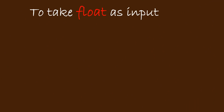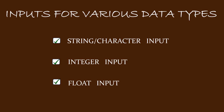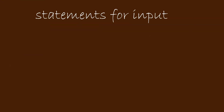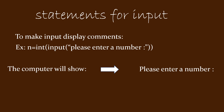To take a float as an input, you type: f equal to float open bracket input open close bracket and then a close bracket. Here f is a variable. If you enter 23.76, since floats are decimal numbers, the variable f will hold 23.76 and you can perform mathematical operations on it. It is also good practice to give a message — for example, n equal to int input please enter a number — so the computer will show please enter a number when the line is executed, and if you enter 23, the value of n will be equal to 23.